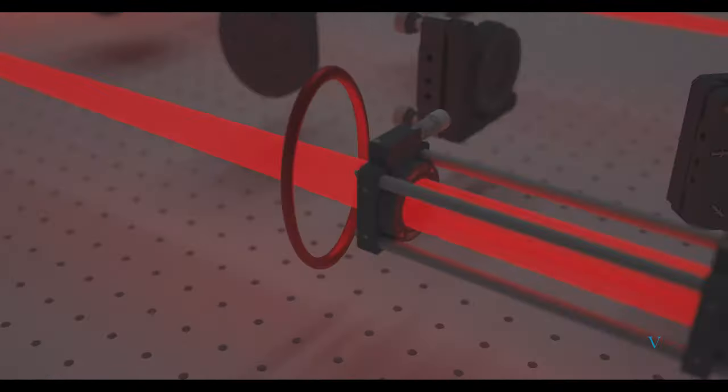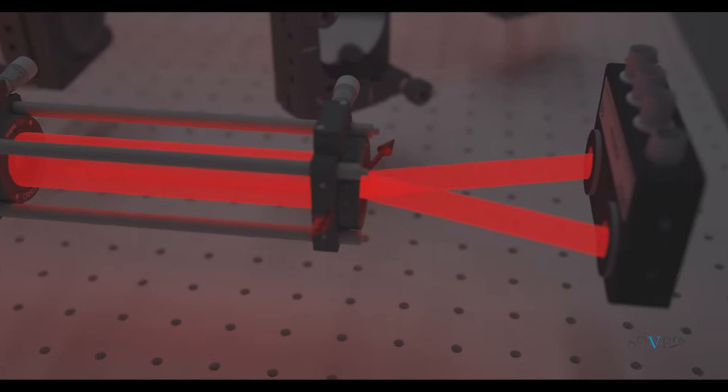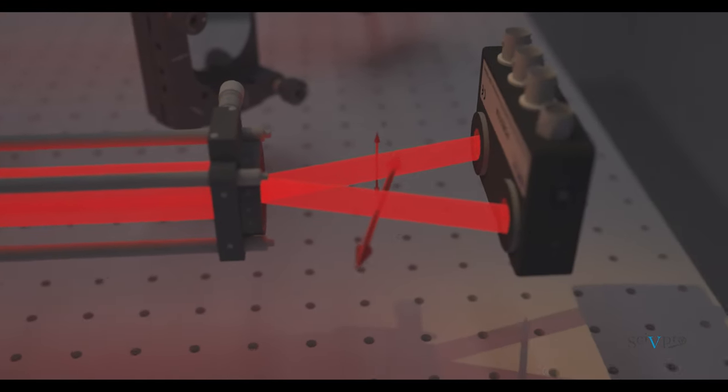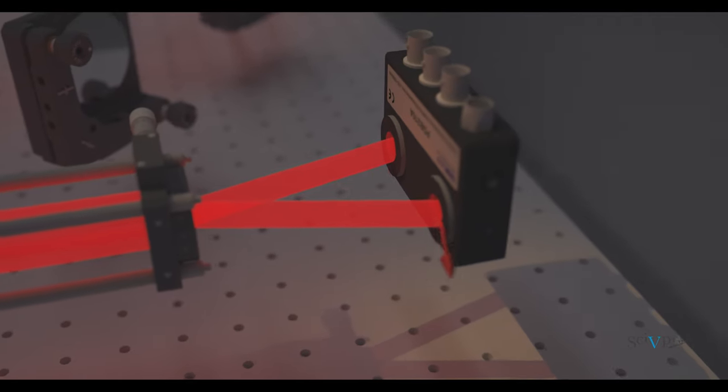The probe pulse passes through a quarter-wave plate and through a Wollaston prism where the probe is split into its orthogonal components before reaching a balanced photodiode.